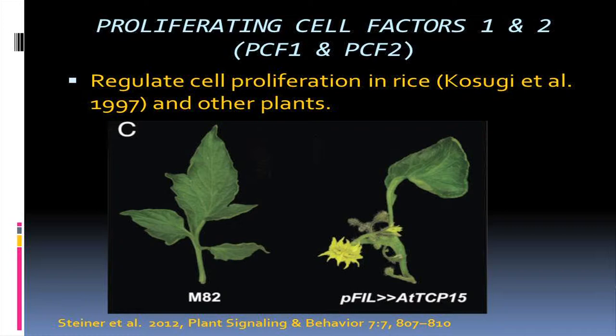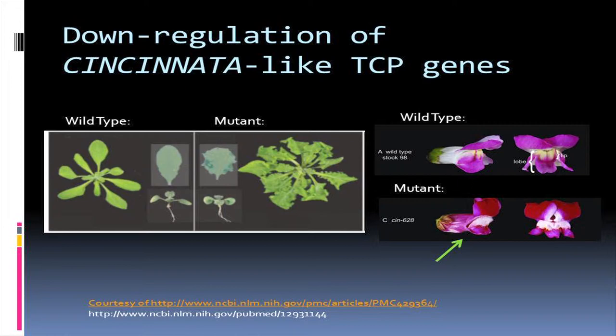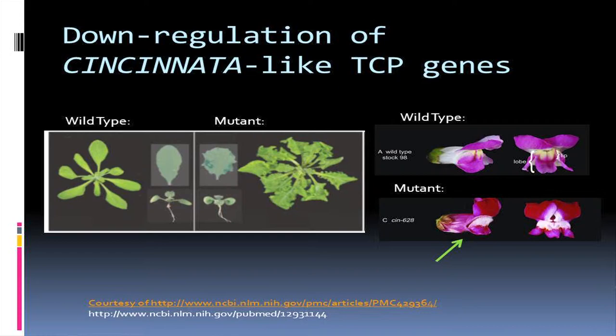Last are the proliferating cell factors 1 and 2, which regulate cell proliferation. If these genes are mutated — if they're down-regulated, the plant won't grow at all, because all things need cell division to live. If they're over-regulated, you'll get an overgrowth of flowers, as seen in this picture. As for the Cincinnati gene, when Cincinnati is down-regulated, you get curvy, weird leaves. And for the flower, the lobe is much smaller than in the wild type — that's where the mutation is exhibited.